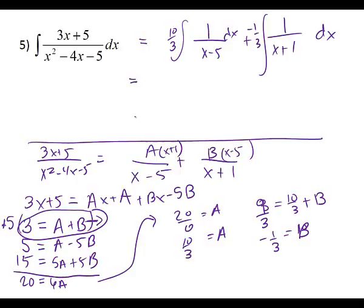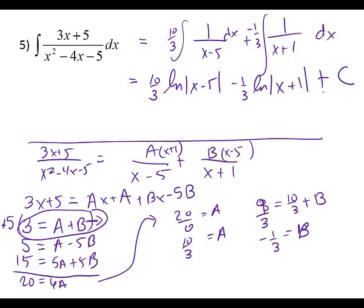So when we go to integrate this, we get ten thirds. What do I get for this piece — the one over x minus five? Good. And then I have the minus one third, and for the one over x plus one, I get plus C. That's the final answer right there.